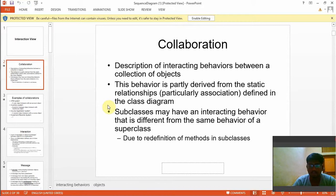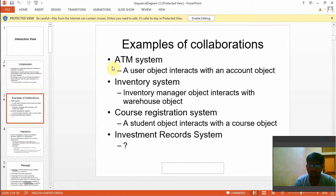Subclasses may have interacting behavior that is different from the same behavior of the superclass. Examples of collaboration are: in an ATM system, a user object interacts with an account object; in an inventory system, an inventory manager object interacts with a warehouse object; and in a course registration system, a student object interacts with the course object. This is the scenario that we are going to implement.